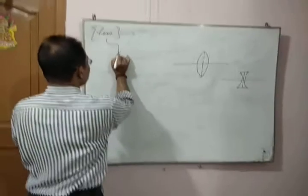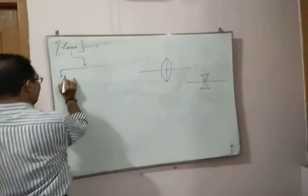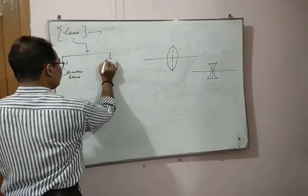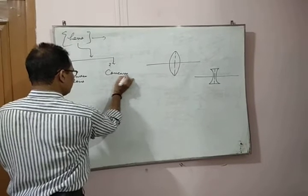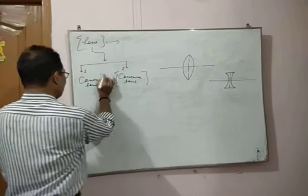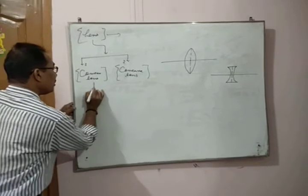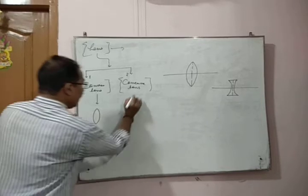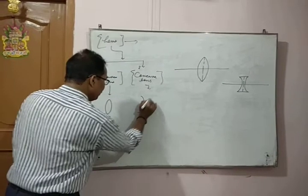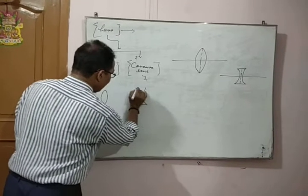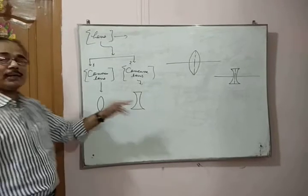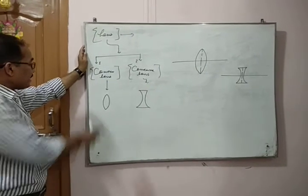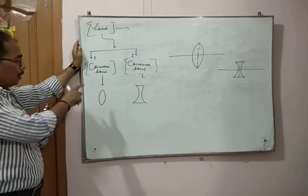Generally the lens has been divided mainly into two parts: number one, convex lens, and number two, concave lens. This is the diagram of the convex lens or double convex lens, and this is the diagram of the double concave lens. Mainly you have to study about the double convex lens and double concave lens. The lens which is thicker in the middle and thinner at the edge is known as convex lens.